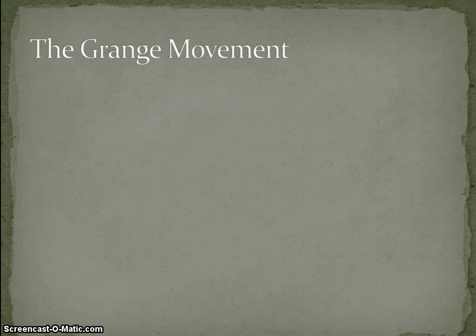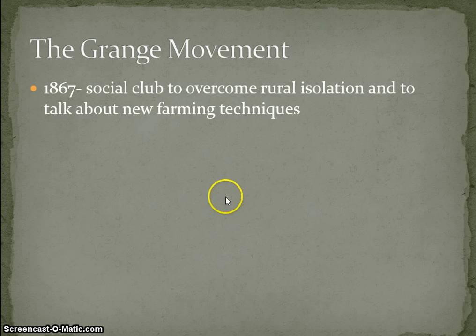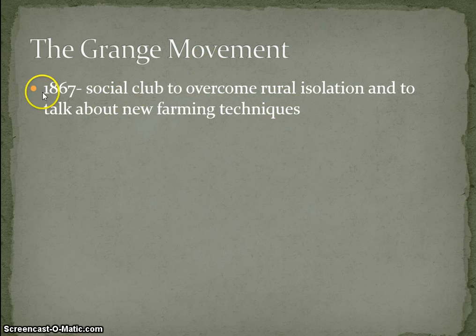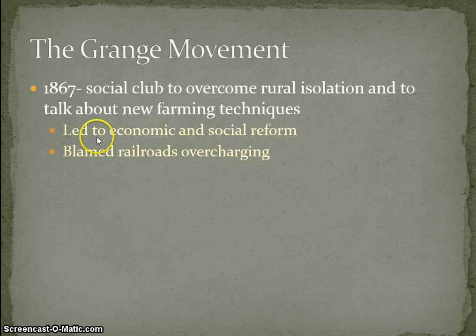Now you have the Grange Movement. It started in 1867 as a social club to overcome rural isolation — rural meaning out in the country — and to talk about new farming techniques. Ultimately, it led to economic and social reform, and they blamed the railroads for overcharging.